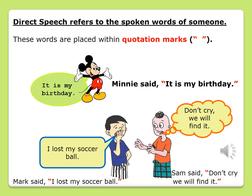Example: here is a picture of Minnie. Minnie has her hands open and she is saying, "It is my birthday." This sentence can be written as: Minnie said, "It is my birthday." Take note — her spoken words are within red quotation marks.